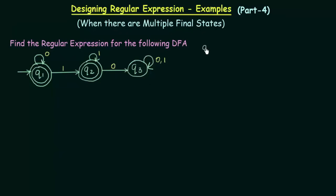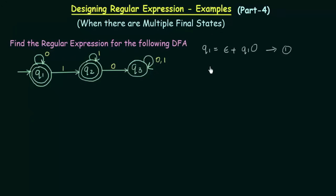Let us start with state q1 and make the equation for q1. q1 can be written by looking at the incoming transitions. We have one incoming transition coming from nowhere, which can be represented by epsilon, plus there is an incoming transition from q1 itself with input 0, so q1·0. There are no other incoming transitions to q1. This is equation number 1.